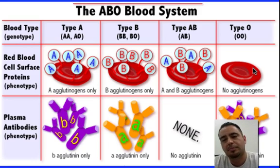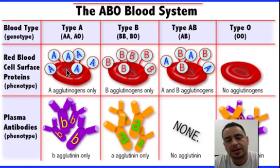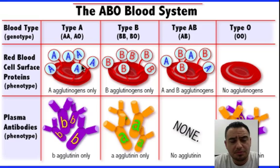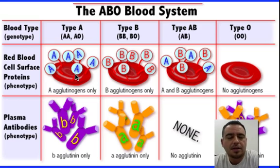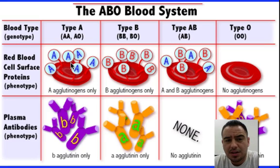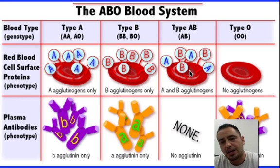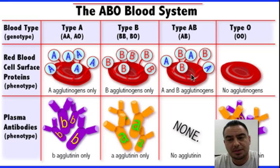Someone with blood type A only recognizes A. If they receive blood from someone with blood type B, they'll only recognize the A and not the B, so they'll destroy those blood cells — and again, it could be deadly. What if someone with blood type A gets blood from someone with blood type AB? They'll only recognize the A part but not the B part, so they'll destroy it, causing blood clotting, a powerful immune response, and possibly death.